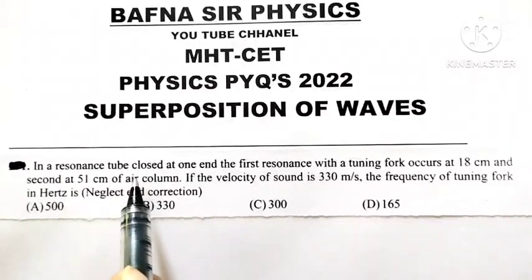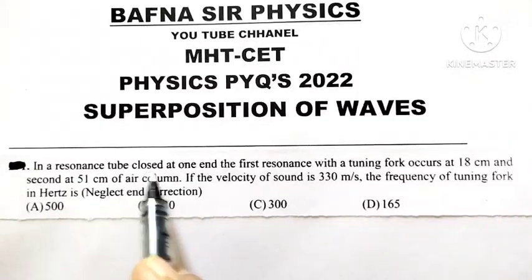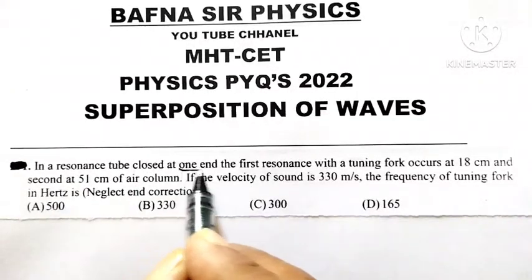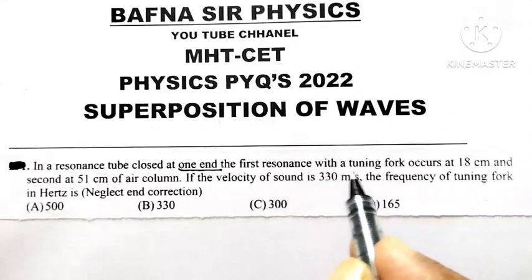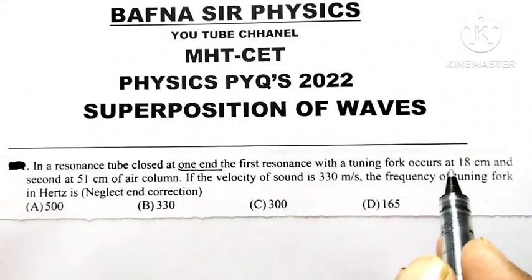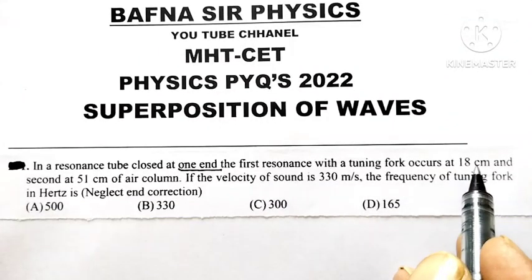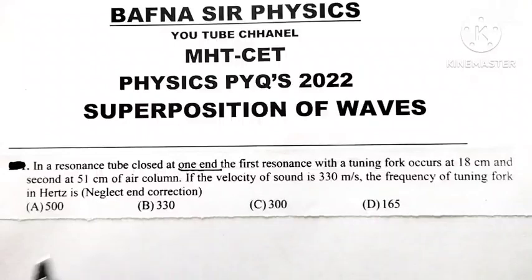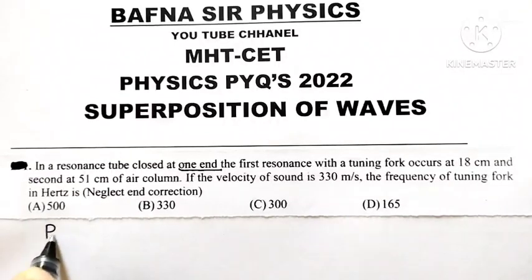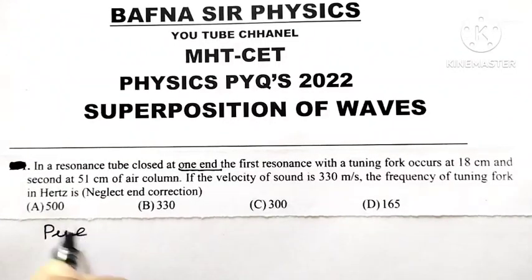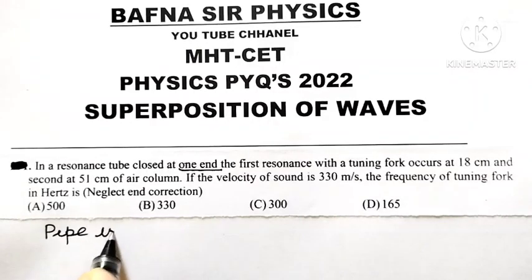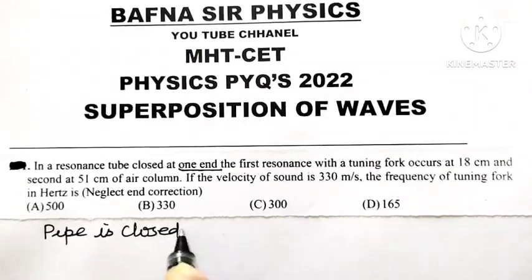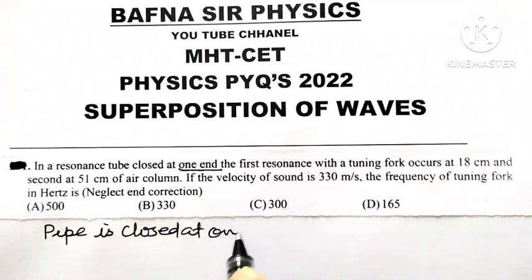In a resonance tube closed at one end, the first resonance with a tuning fork occurs at 18 cm. In the resonance tube experiment, the pipe is closed at one end.